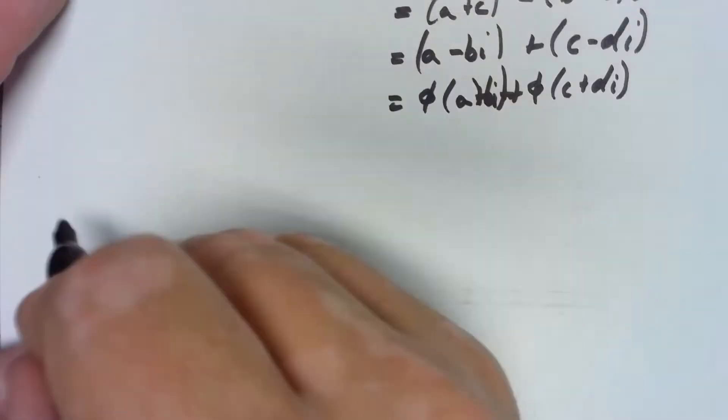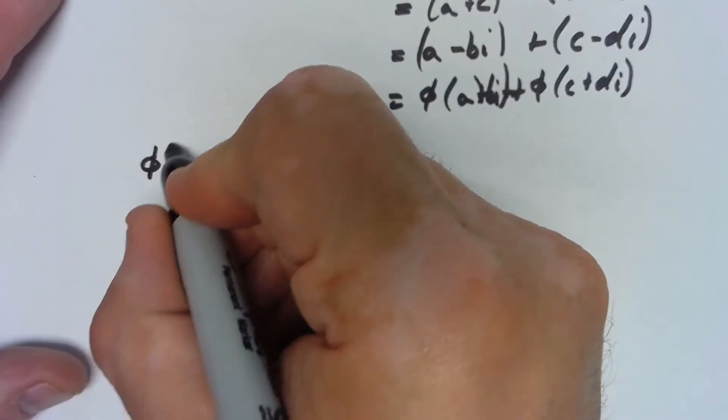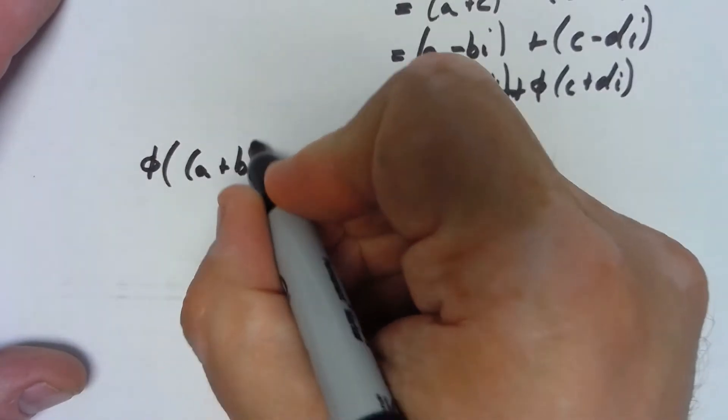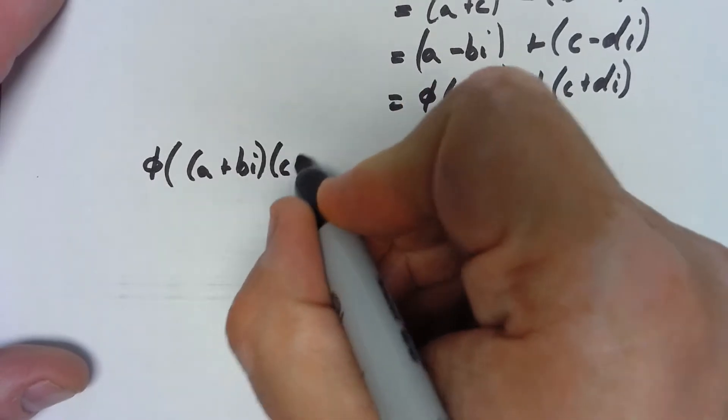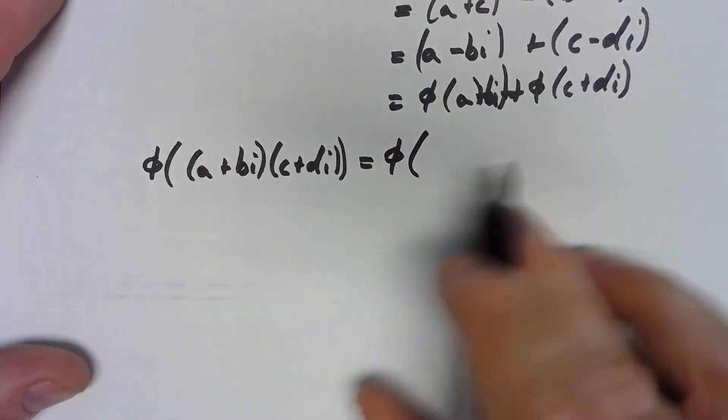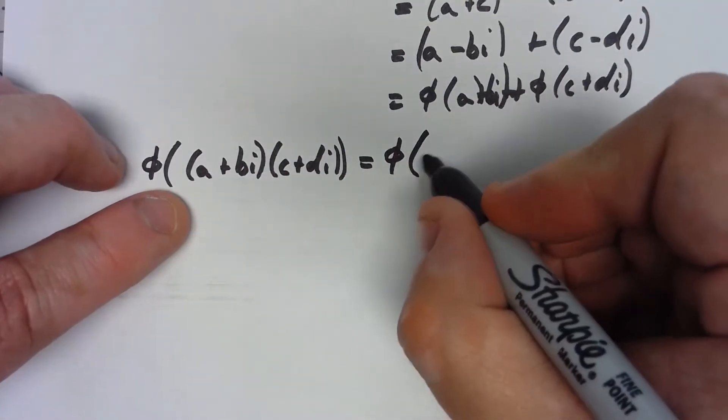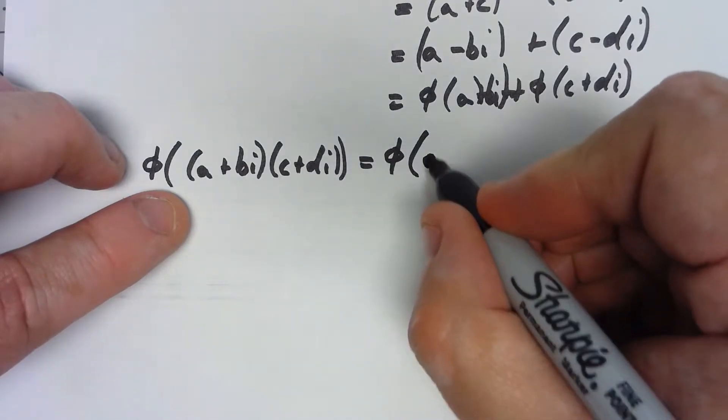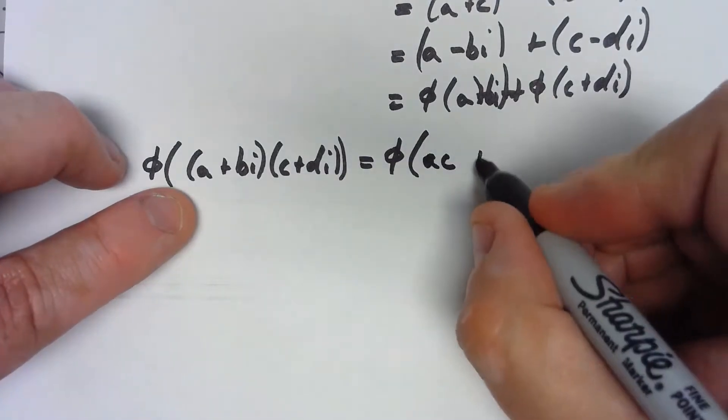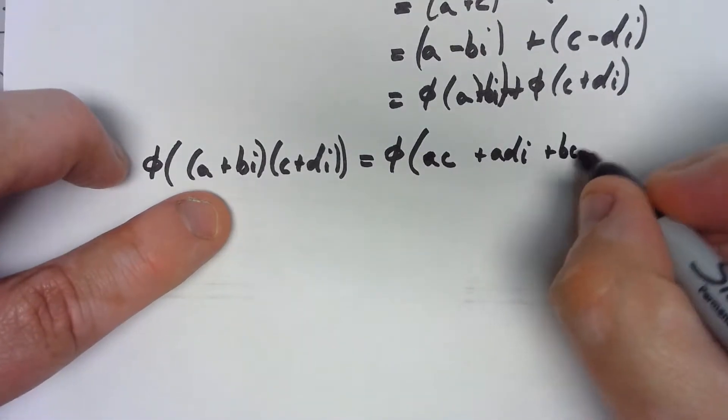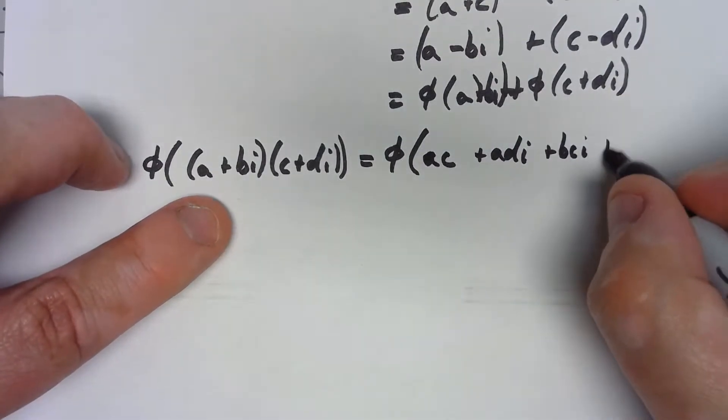That's really easy, but multiplication is just a little bit more going on there. If I take φ(a + bi) times (c + di), that's going to be φ of... If I foil these things out, I get ac + adi + bci + bdi².